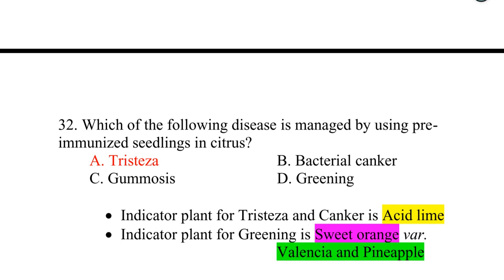The disease managed by using pre-immunized seedlings in citrus is Tristeza — option A. The indicator plant for Tristeza and canker is acid lime. The indicator plant for greening is sweet orange variety Valencia and Pineapple. These two indicator plants are important to remember.